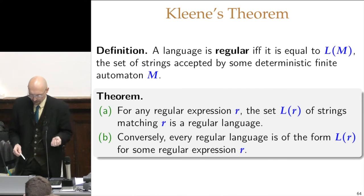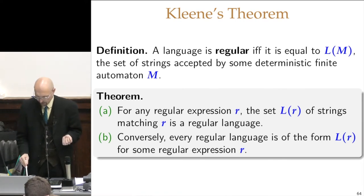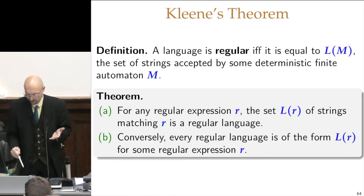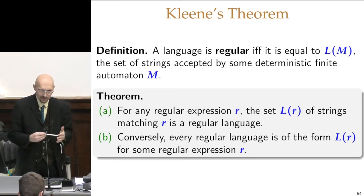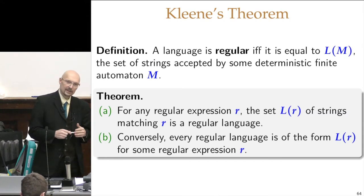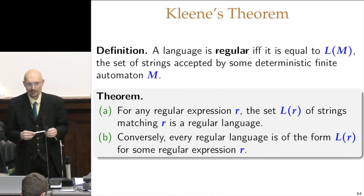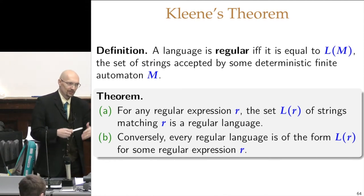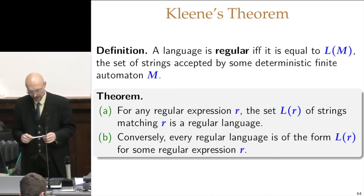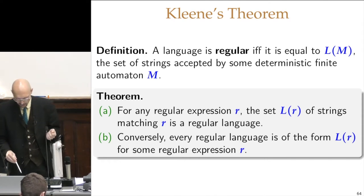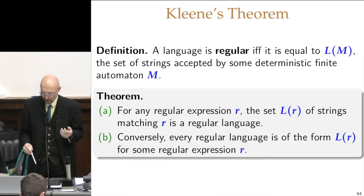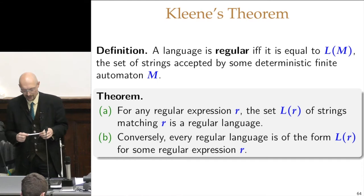By definition, a language is regular if and only if it is recognized by some DFA. By the theorem we just proved, this also means a language is regular if and only if it is recognized by an NFA epsilon, because all these things are equivalent in expressive power anyway. And the next thing we are going to work on is that it is also regular if and only if it is recognized by a regular expression.